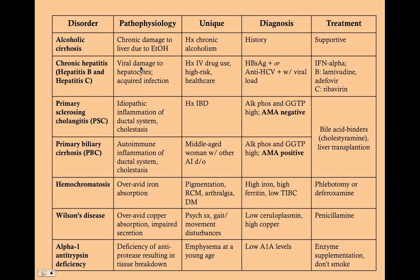To summarize the two acquired/idiopathic causes and three inherited causes of cirrhosis: the key difference between PSC and PBC is the patient population and the AMA titer — PSC occurs in IBD patients with a negative AMA, while PBC occurs in middle-aged women with other autoimmune disorders and a positive AMA — but both are treated the same way with bile acid binding resins and liver transplant.